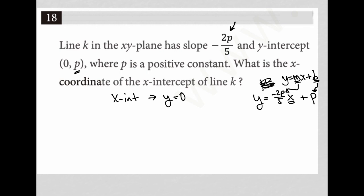So I'm going to take my Y equals negative 2P over 5 plus P. I'm going to understand that I'm replacing Y with 0, because that's how you find an X intercept. So now 0 equals, it should have been X right there, negative 2P over 5X plus P.